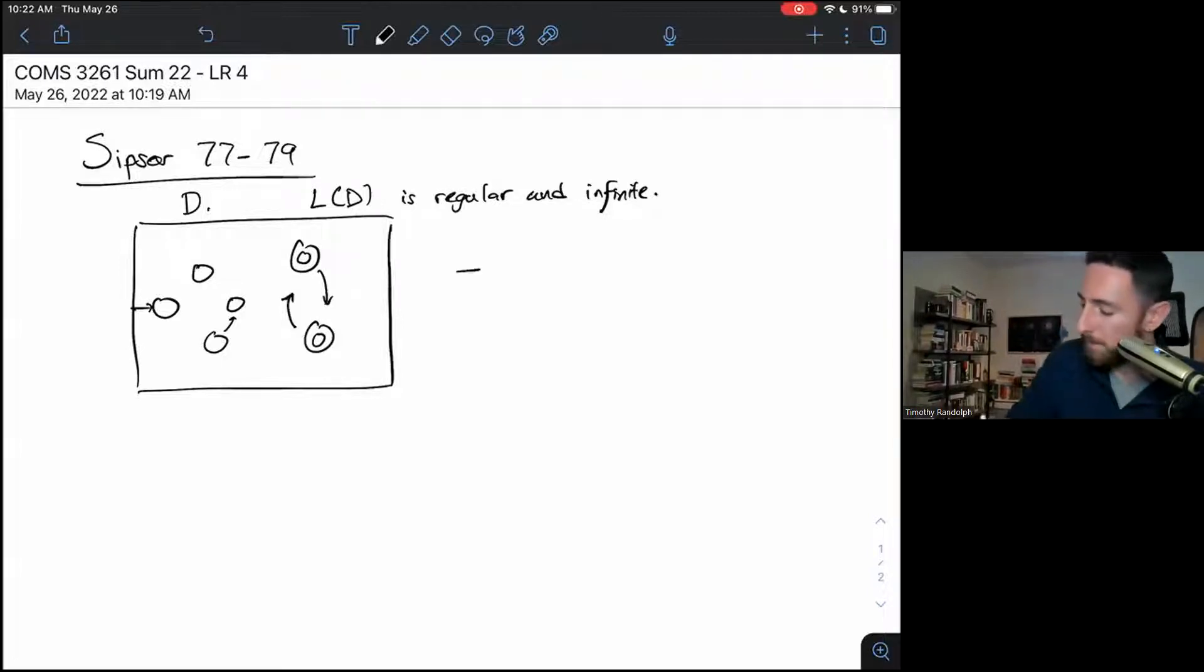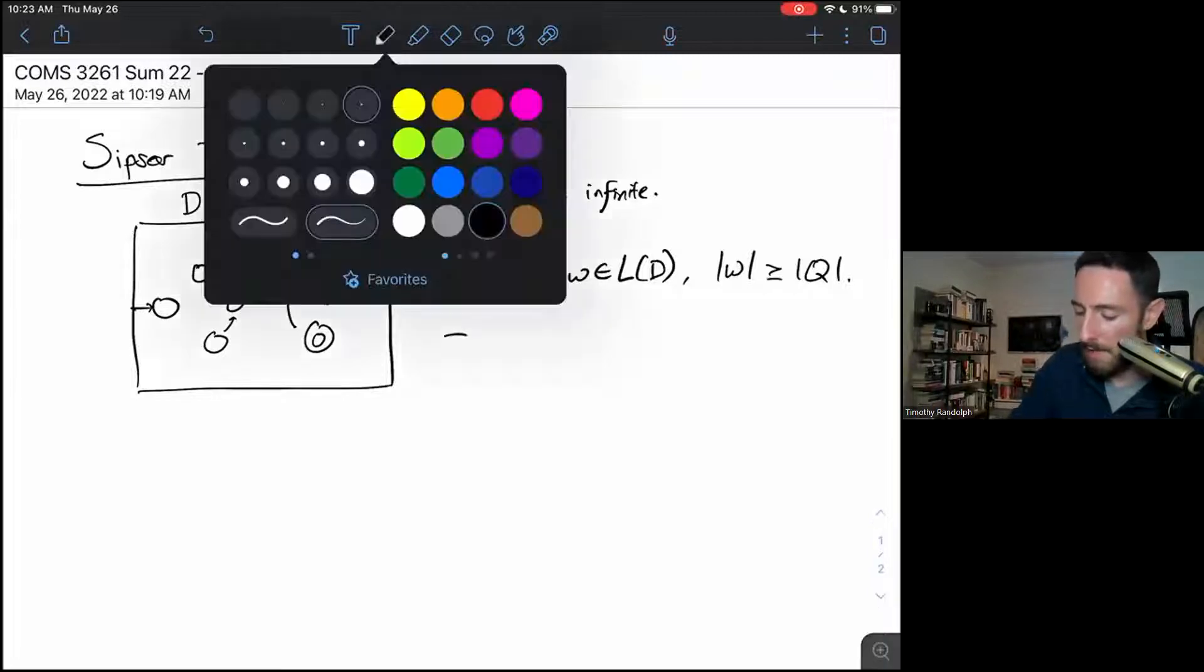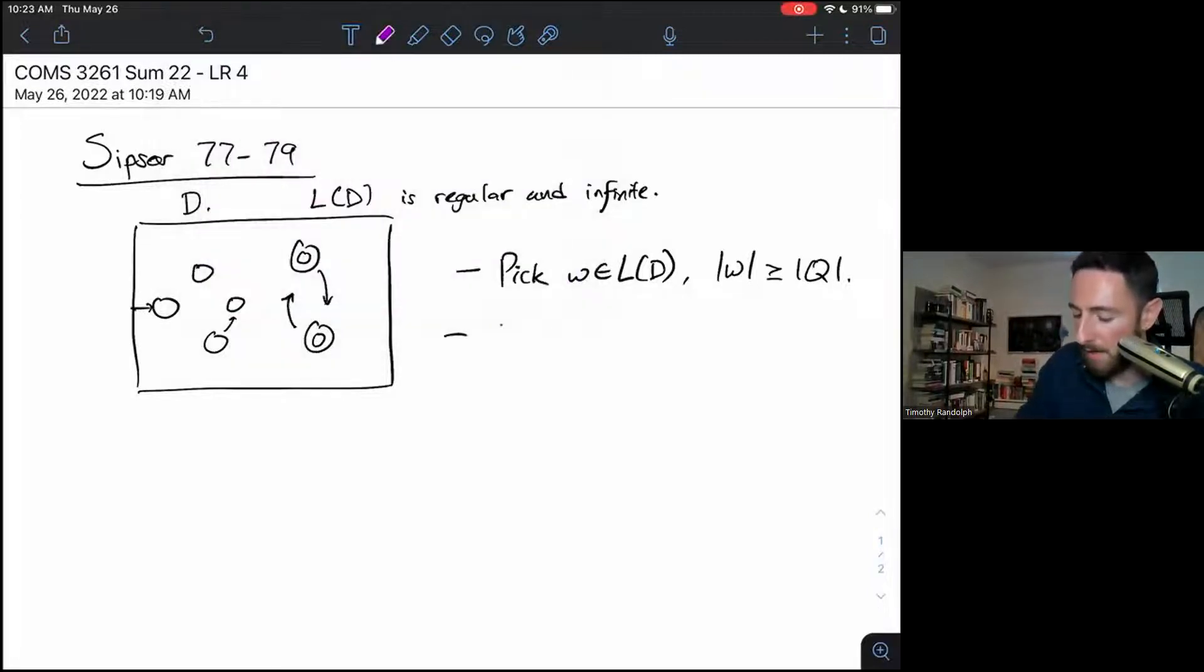So what I'll do is I'll pick a string W in this language, such that the length of the string is greater than or equal to the number of states in my DFA. And I'm going to draw the path of the computation of D on W in purple.